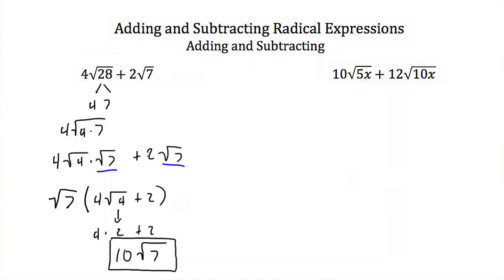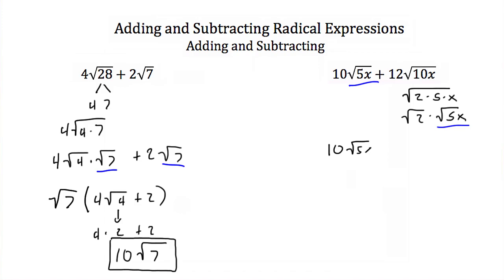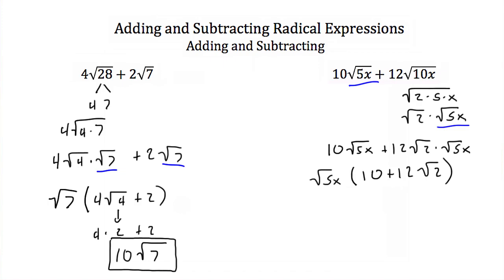Here we have 10 square roots of 5x plus 12 square roots of 10x. For the second term, I can think of 10x as 2 times 5 times x. That means the square root of 10x equals the square root of 2 times the square root of 5x. Now I have like radicals: 10 square roots of 5x plus 12 times the square root of 2 times the square root of 5x. Factoring out the square root of 5x, I get the quantity 10 plus 12 square roots of 2, times the square root of 5x. This is our solution.